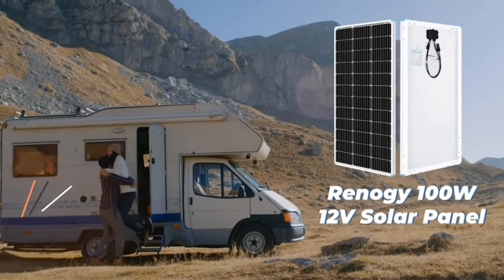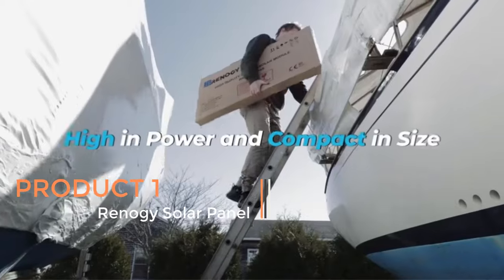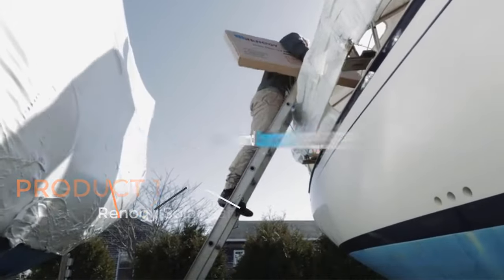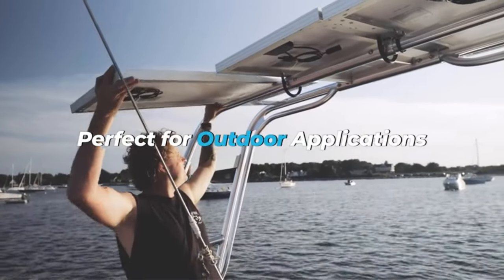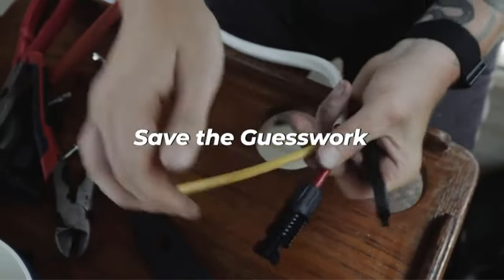Product 1: Reno-G Solar Panel. The Reno-G Solar Panel 100 Watt 12 Volt, also known as the RNG 100 DSS, is a high-efficiency monocrystalline photovoltaic PV module designed to provide reliable power in off-grid applications.